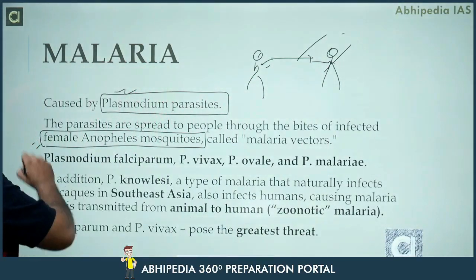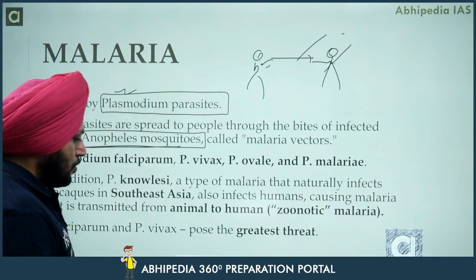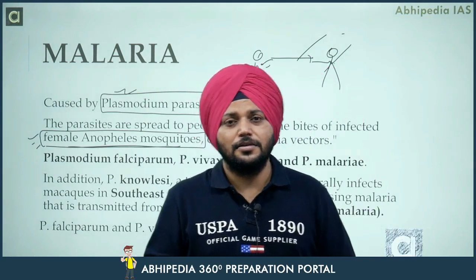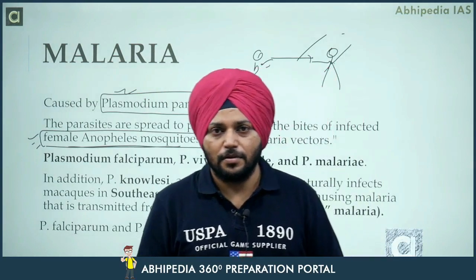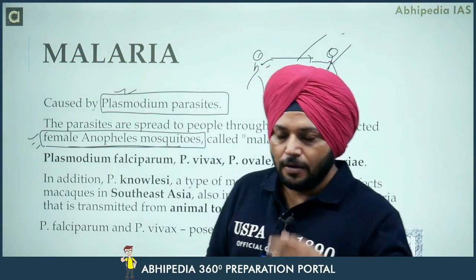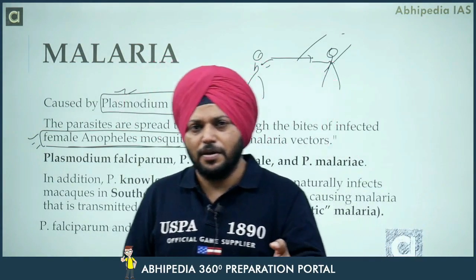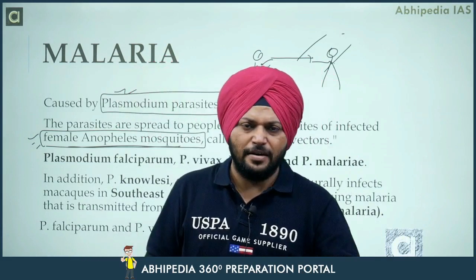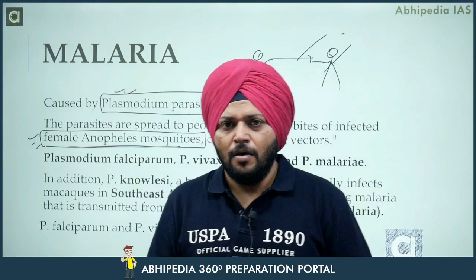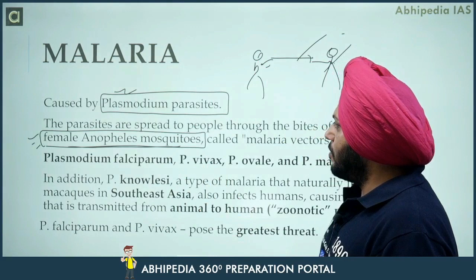Through the bites of infected female Anopheles mosquito. Different symptoms occur — for example, some people get shivering on the third day, some have milder symptoms. These are different tertian cycles that run depending on different causative agents.